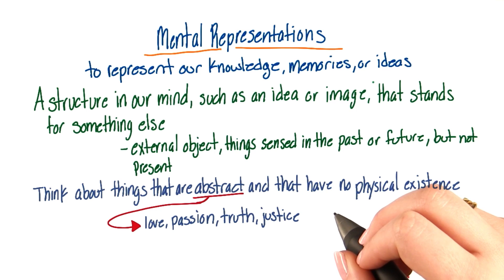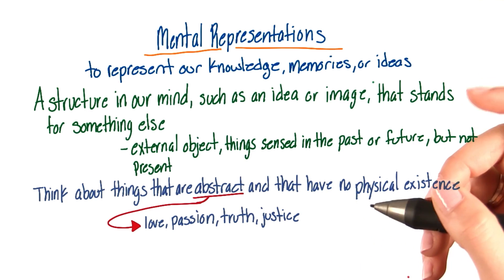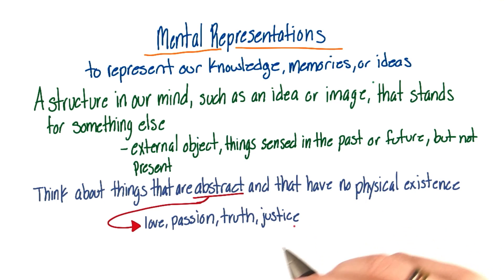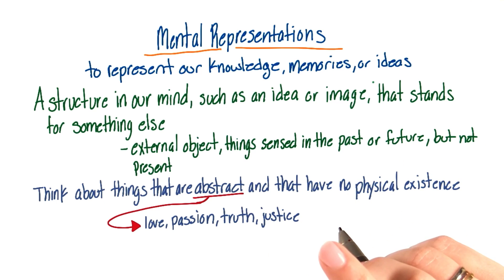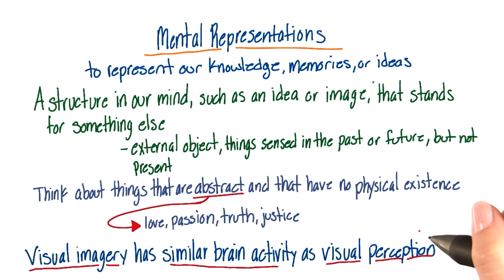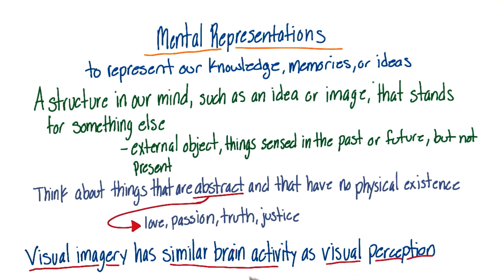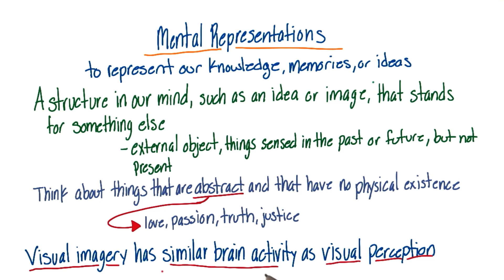Visual imagery involves visual representations created by the brain after the original stimulus is no longer present. The visual system is mostly located in the occipital lobes. One interesting thing to note is that while we're visualizing something, our brain is active in much of the same way as it is during visual perception — that is, visual imagery has similar brain activity to visual perception.